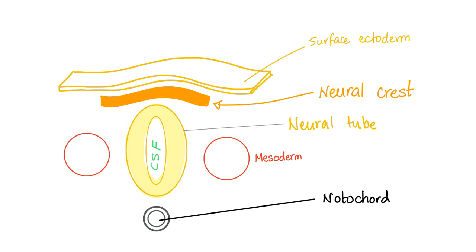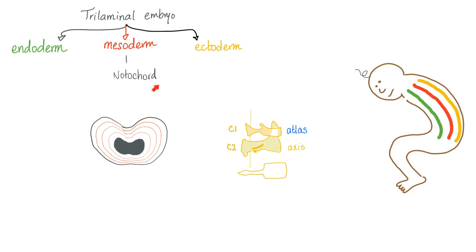The adrenal medulla is a modified ganglion — that's why it comes from the neural crest. Oligodendrocytes, which myelinate the central nervous system, come from the neural tube. The notochord will never become nervous tissue — that's a famous mistake. The spinal cord came from the ectoderm, specifically the neuroectoderm, from the neural tube. The notochord is mesoderm: muscles, bones, cartilage, etc.